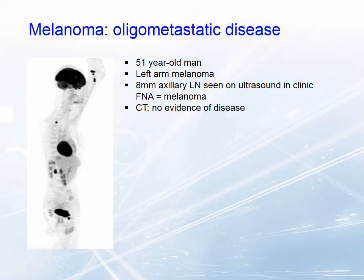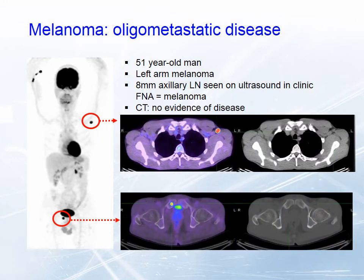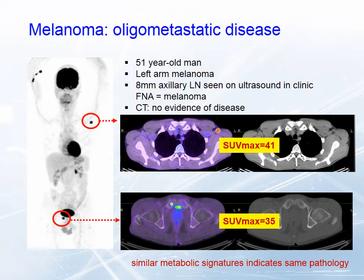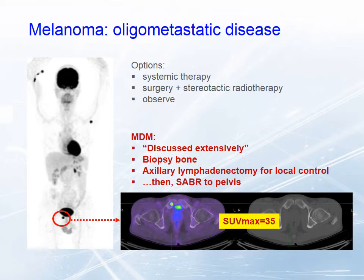A 51-year-old male with a left arm melanoma was having clinical surveillance including ultrasound. An 8mm node was found, and fine-needle aspiration showed melanoma. CT scan was normal. The PET scan showed a single metastasis in the left axillary node and a bony met in the pelvis. The intensity of metabolic activity was very high at both sites — an SUV of 41 is very high for FDG PET — and the similar numbers suggest the same pathology. Biopsy confirmed melanoma in both sites. The patient was discussed extensively in a multidisciplinary meeting, which recommended excising the node and giving SABR to the pelvis to aim for cure.